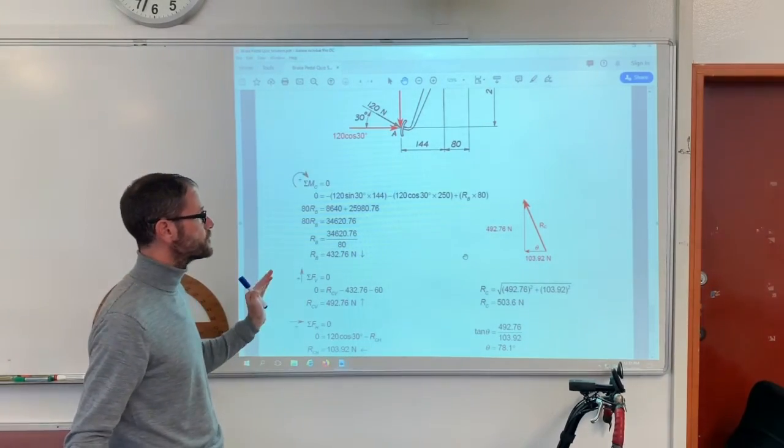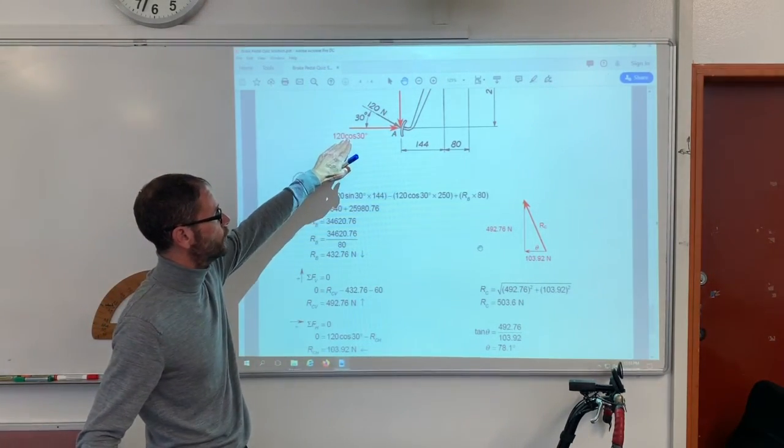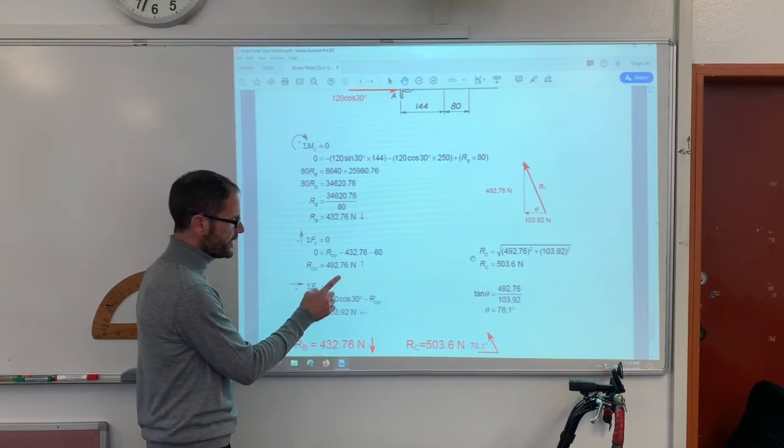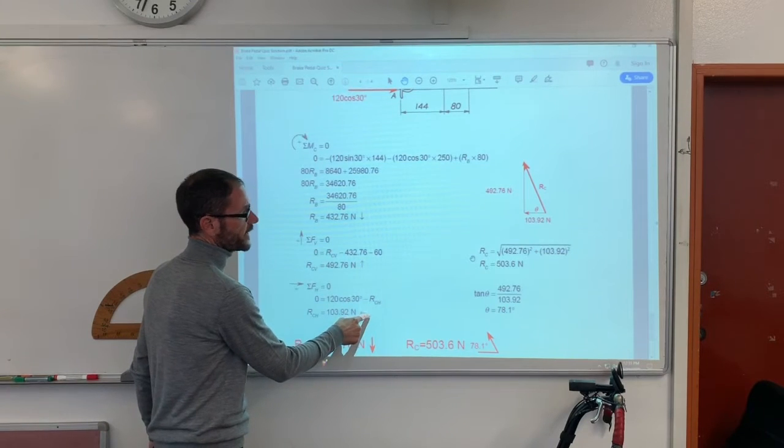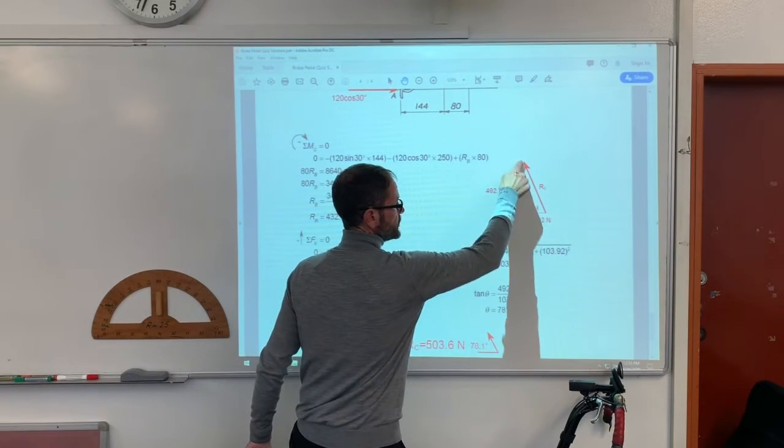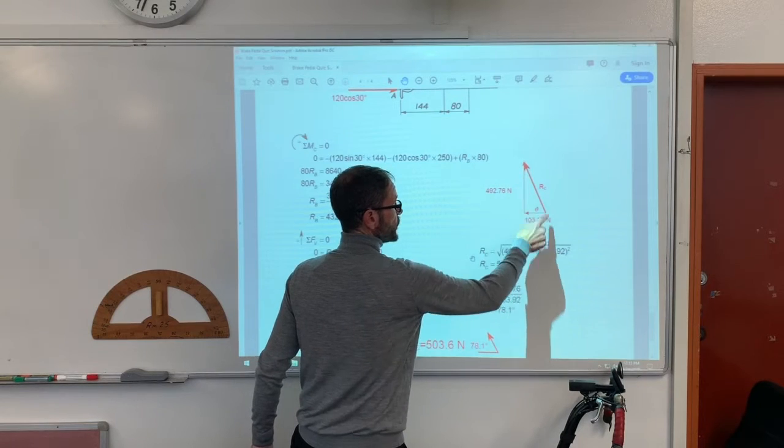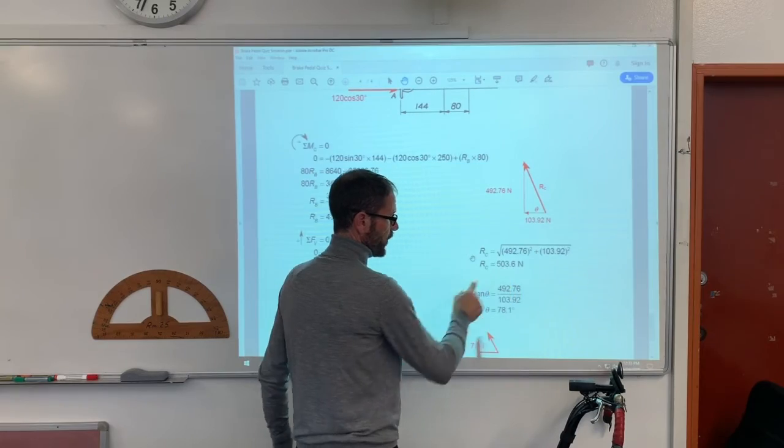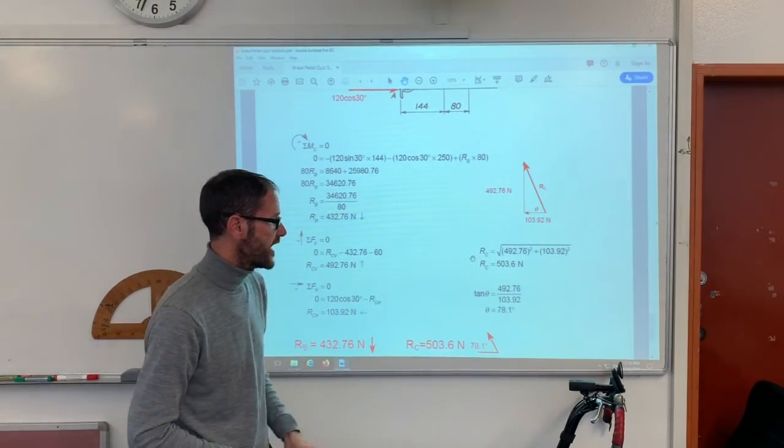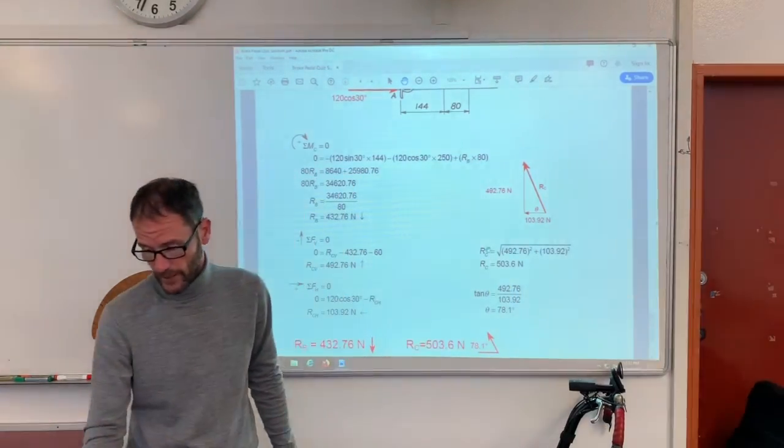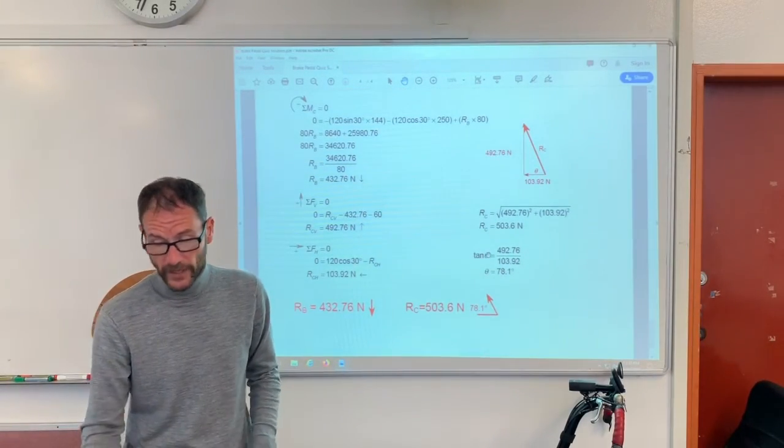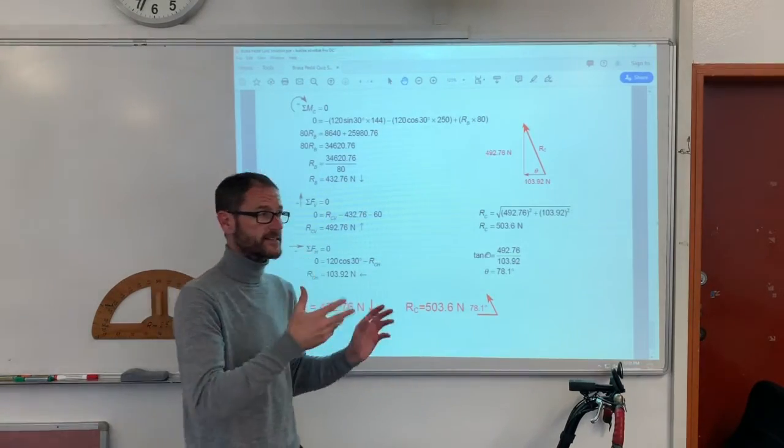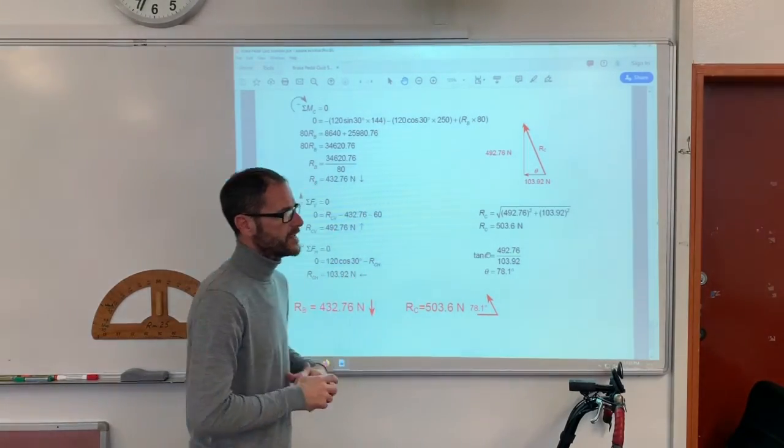Now, I need to sum forces horizontal. Now, that's pretty straightforward. There's only this horizontal force. So, the horizontal reaction at C is going to be equal to that. Now, I've got an upward force and I've got a force to the left. So, I need to add those two together vectorially to find the total reaction at C. I've now used Pythagoras to find 503.6 newtons and I've found my angle is 78.1 degrees.